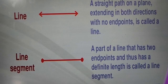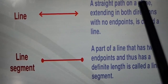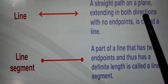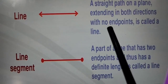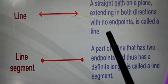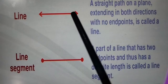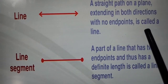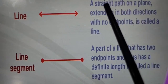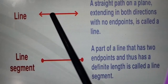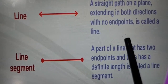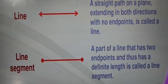Next are the line and line segment. A straight path on a plane extended in both the directions with no end points is called a line. It is never ending on both sides. That is a straight path, straight in both the directions, extended in both the directions with no end point, is called a line.